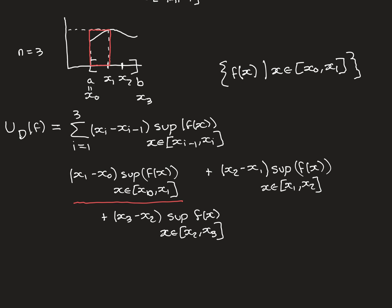If we considered a function that wasn't bounded above over the closed interval AB, then for any dissection, in at least one of the sub-intervals the function must be unbounded - because if it were bounded in all of them, it would be bounded over the entire interval. So if it's not bounded overall, at least one of the suprema wouldn't exist. That's the reason that to define the upper Riemann sum, the function must be bounded above. And for it to be Riemann integrable, we need both upper and lower Riemann sums defined, so we need the function to be bounded overall.